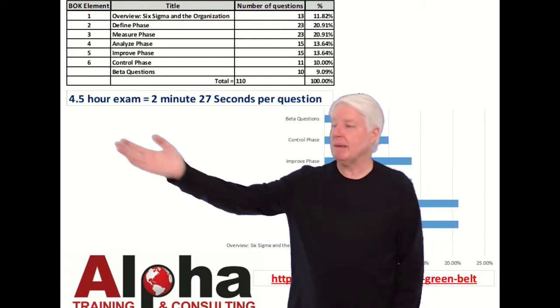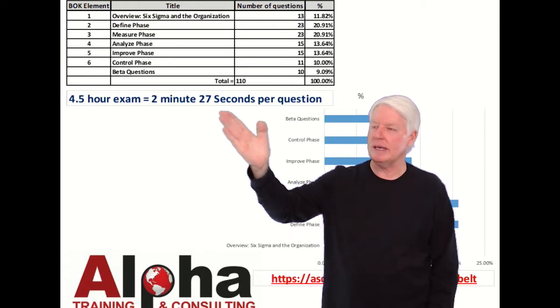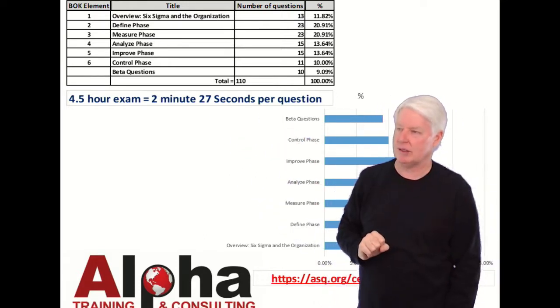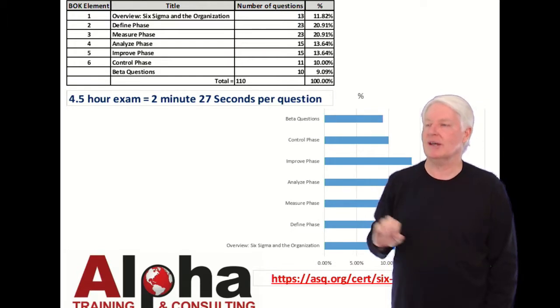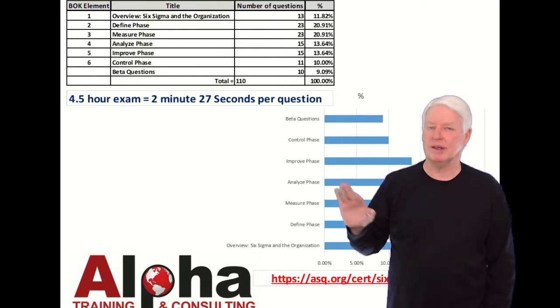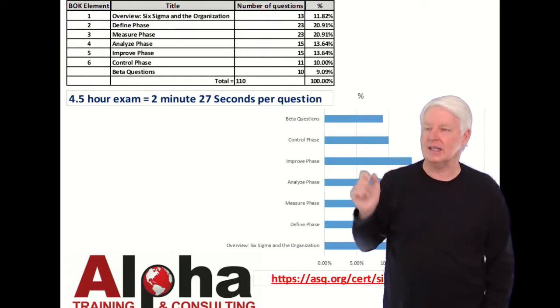And so that'll give you 110 questions. Now, the Green Belt exam is a four-and-a-half-hour exam with 110 questions. That equates to 2 minutes and 27 seconds per question. That's more time than the average ASQ exam. Most ASQ exams are under 2 minutes. So you have 2 minutes and 27 seconds per question. That's not bad at all.